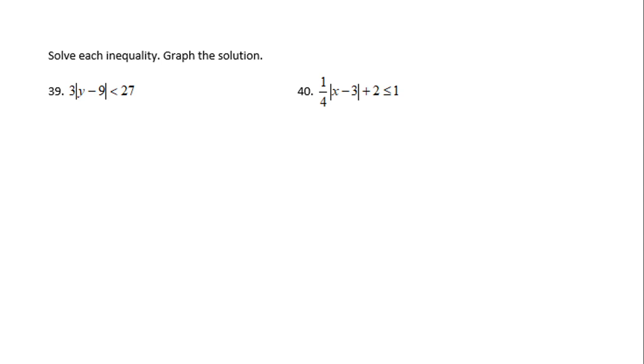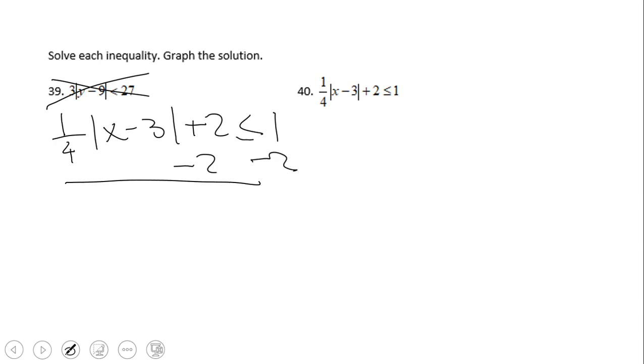I'm going to look at number 40, which is a little bit more complicated because you have a fraction and addition. So like in the other video clip where you solve absolute value equations, the first thing we're going to do is isolate the absolute value. The first step, I'll subtract 2, and then we're going to multiply by 4.